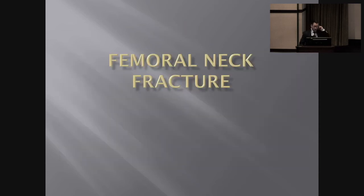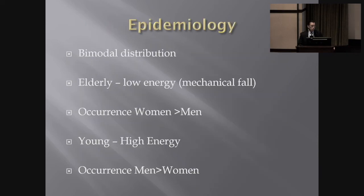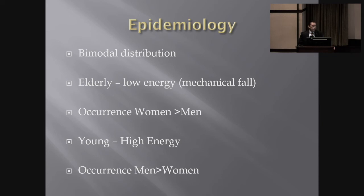Let's move on to femoral neck fractures specifically. There are four types under the Garden classification. It divides fractures into four patterns going from a simple fracture to where the femoral head is no longer articulating. Who gets these fractures? It's bimodal — elderly and young. In the elderly it's usually a low-energy mechanical fall, more common in women. In the younger population, it's typically high energy, and incidence is greater in men than women.